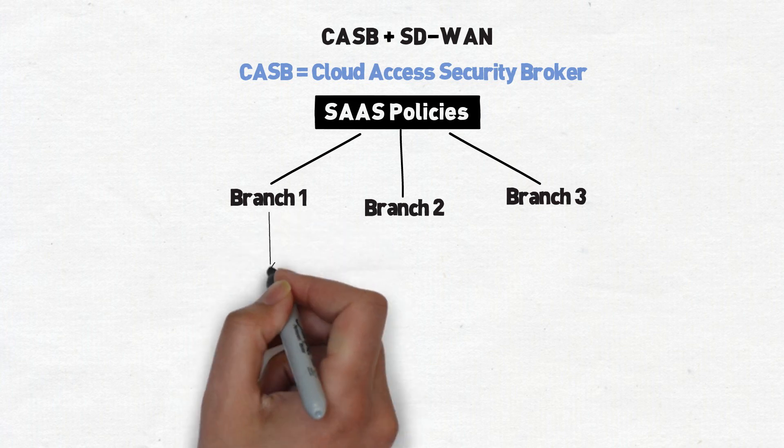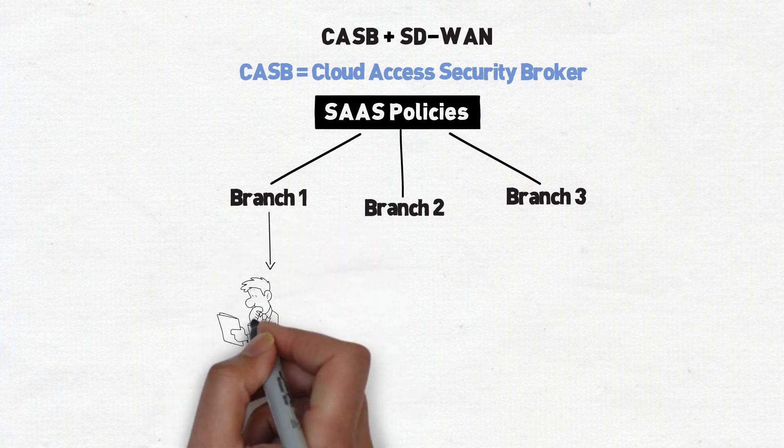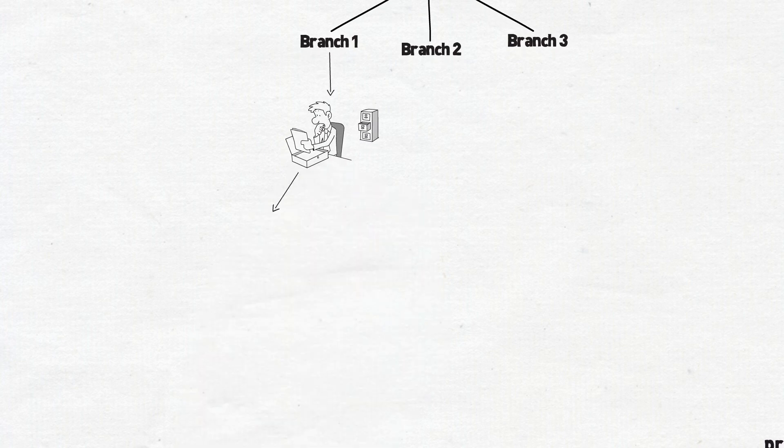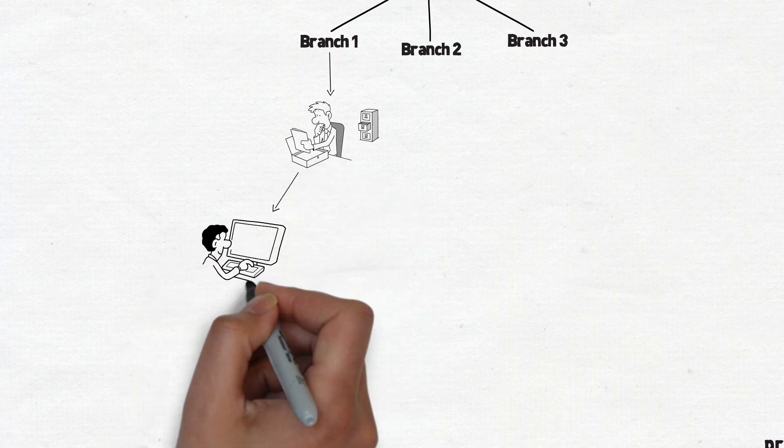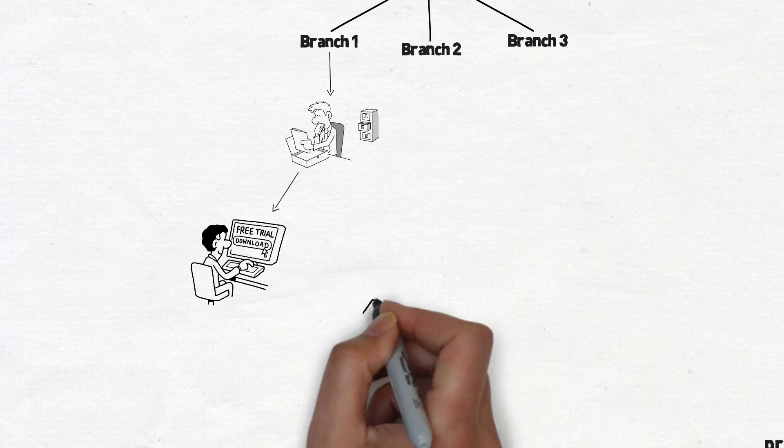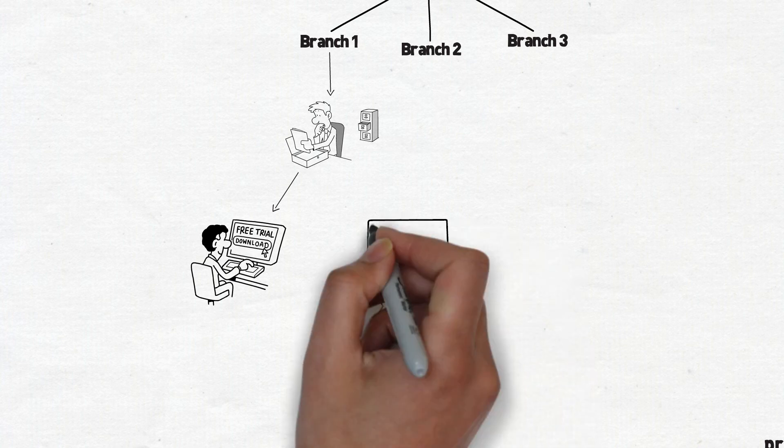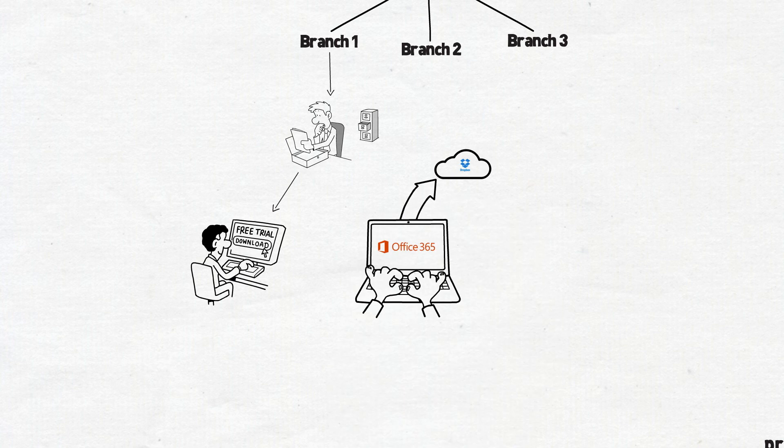With CASB, you can now see and control down to the file how your data is being used. Some common use cases could be a user downloading sensitive data to an unsanctioned device or a user moving PII data on or off a cloud service. These are things that we would have been blind to without a CASB solution. But when working in conjunction with your SD-WAN appliance, you can now do global enforcement of all of these policies.